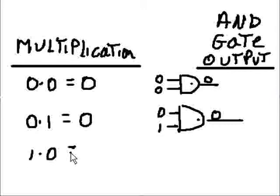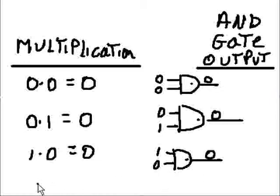Then 1 ANDed with 0 will give you a 0. In multiplication, if you multiply 1 times 1, you're going to get a 1.